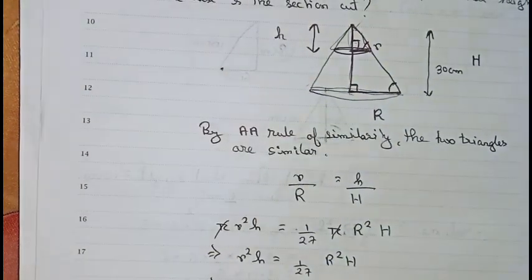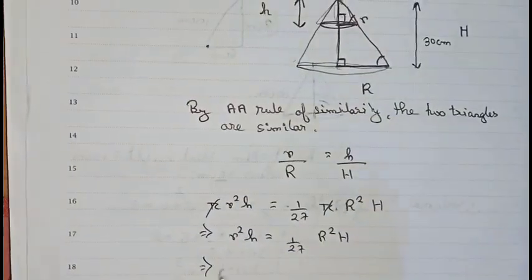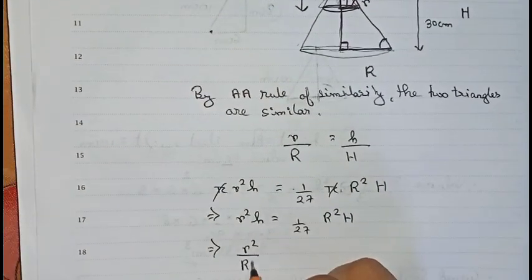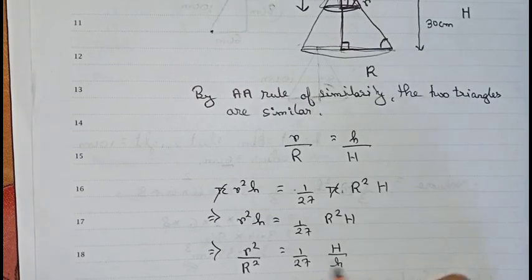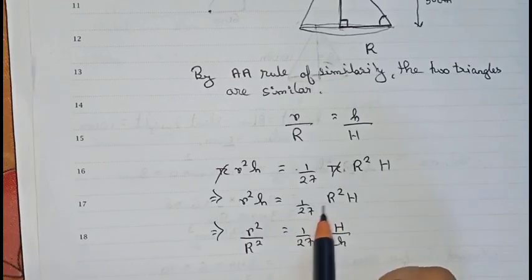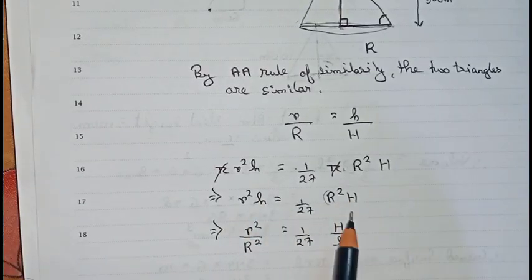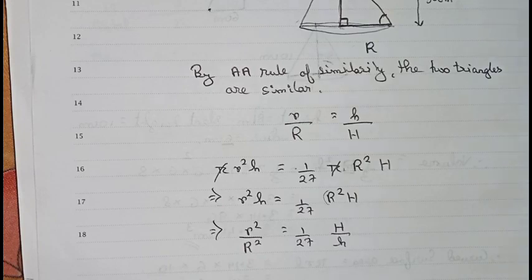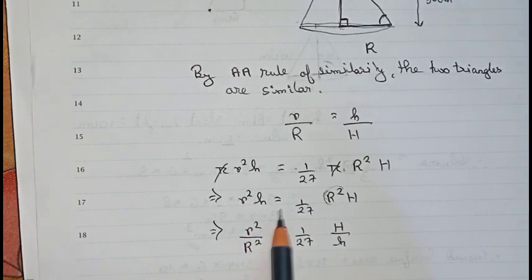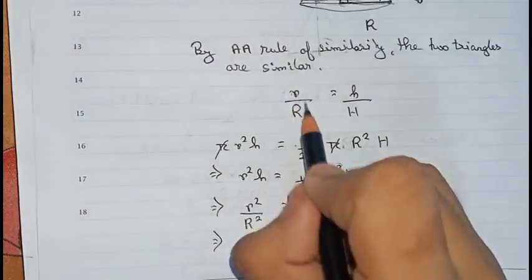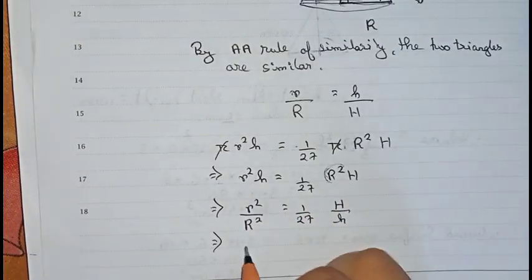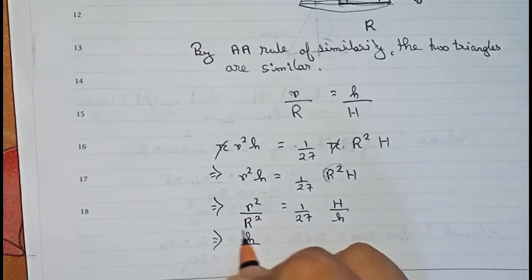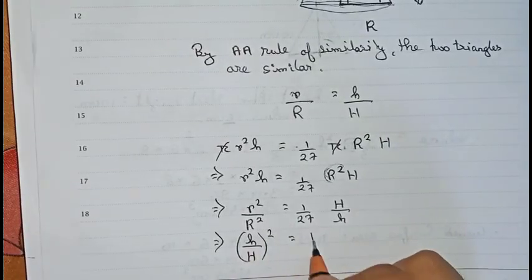Now we simplify: r² by R² equals (1/27) multiplied by H by h. We can write r/R as h/H, so in place of r² / R² we substitute (h/H)². Therefore (h/H)² = (1/27) × (H/h), which gives h³/H³ = 1/27.